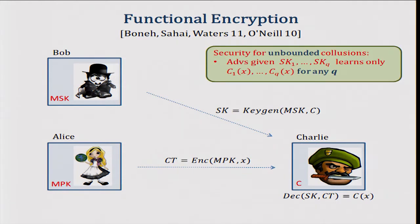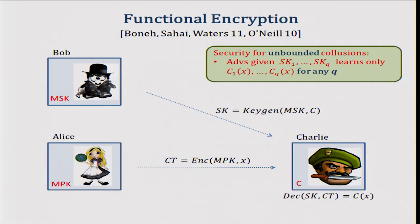The security for unbounded collusions informally means that an adversary who is given many secret keys — secret key 1 up to secret key Q — should be able to learn all the outputs of the circuits evaluated on the same input X, but nothing more. This should hold for arbitrary polynomial Q, with no prior bound.